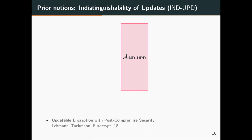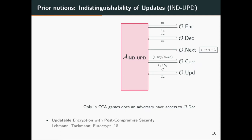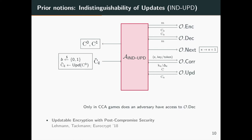The IND-UPDATE notion states that an adversary shouldn't be able to tell which ciphertext the currently given ciphertext was updated from. In the IND-UPDATE game, different from IND-INC, the adversary sends two ciphertexts from the previous epoch as input of a challenge query. The challenger responds with an updated ciphertext of C_B as the challenge ciphertext. Again, the adversary guesses the value of B, and if she guesses correctly, she wins the security game.